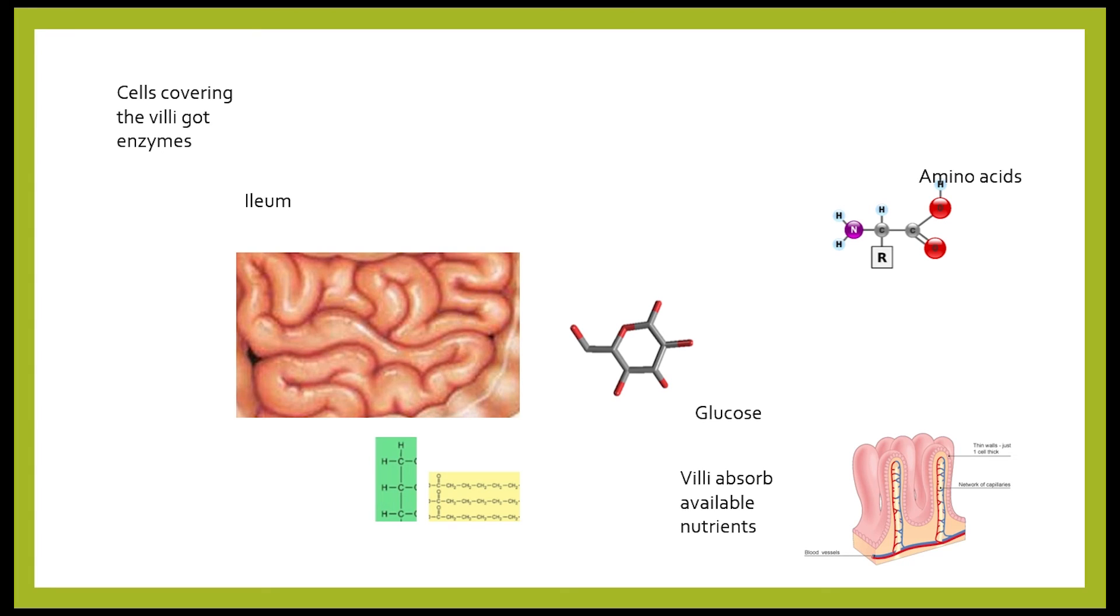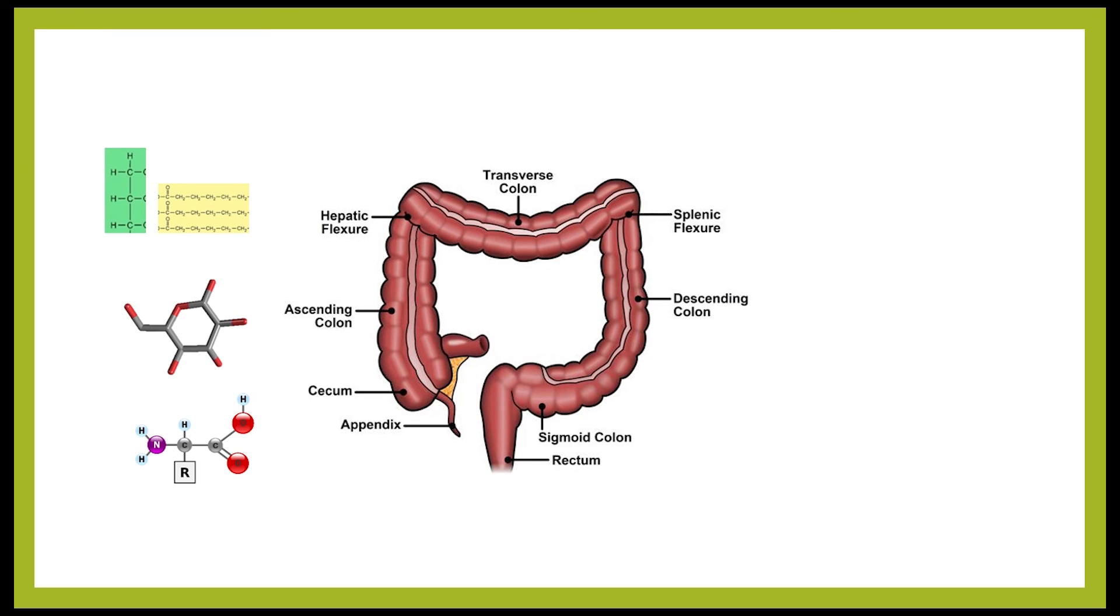Everything that is left after digestion and absorption, which is everything that can't be digested nor absorbed, moves on to the large intestine, which is made of the colon and rectum. In humans, the caecum and appendix have no function. In the colon, more water and salts are absorbed. However, the colon absorbs much less water than the small intestine.